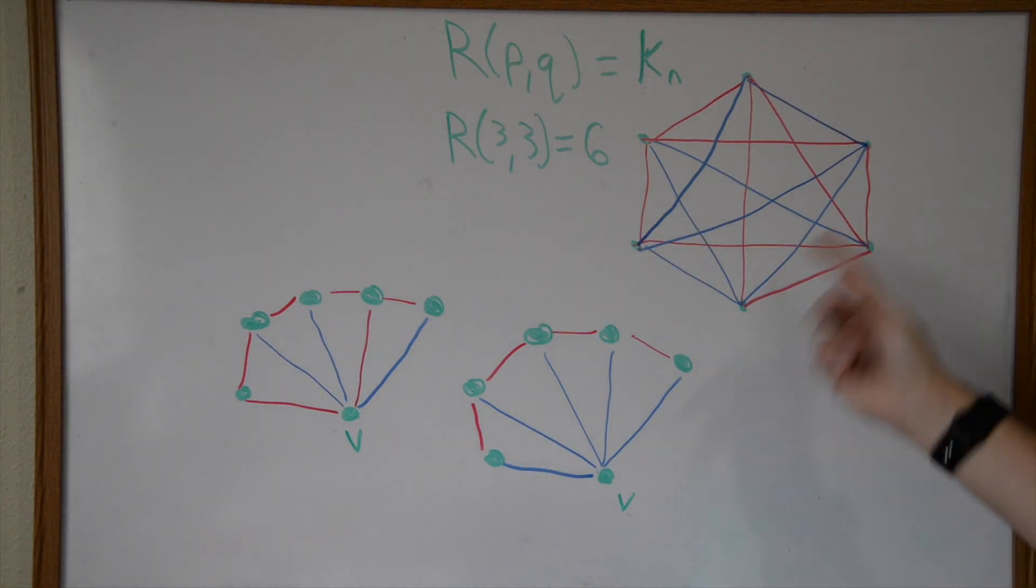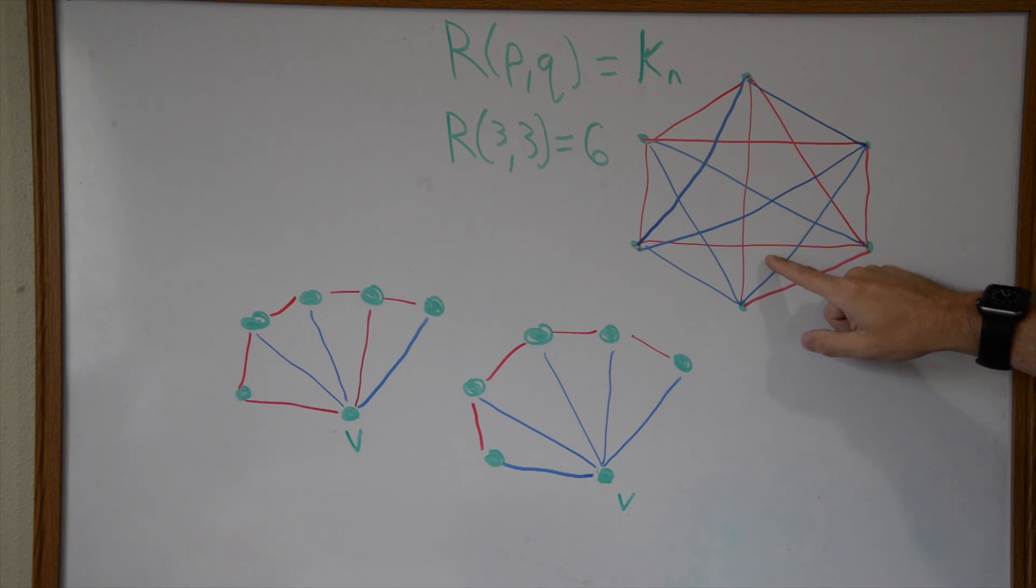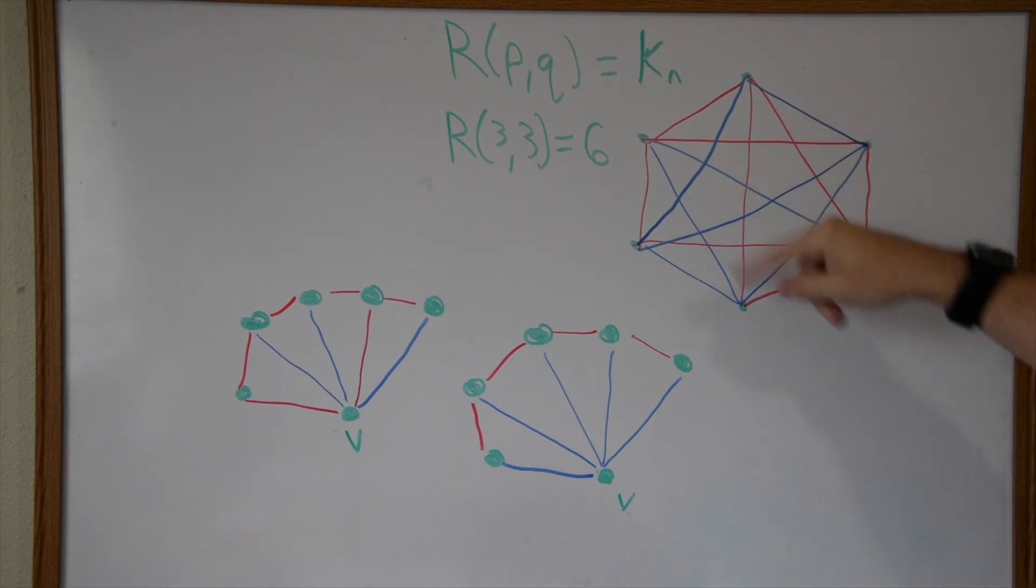Actually it needs to be two colors, but it doesn't matter what colors those are. I'm just using red and blue just because that's what I'm familiar with. This is the complete graph on six vertices, K6, and I've just randomly colored these vertices.